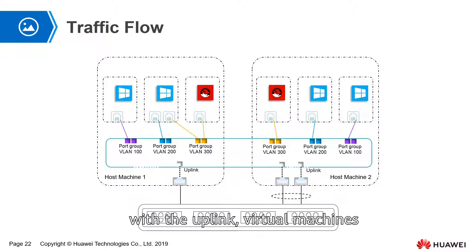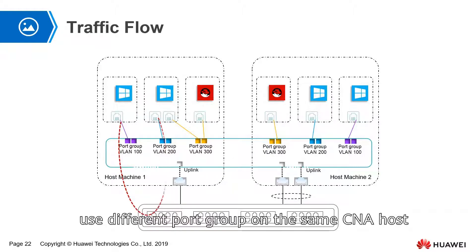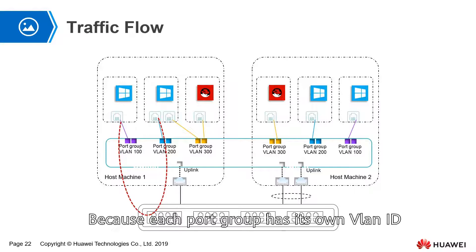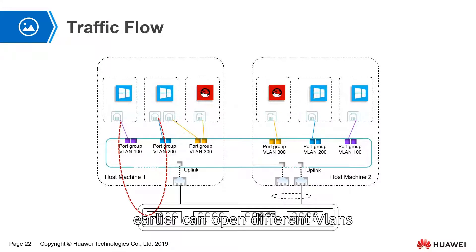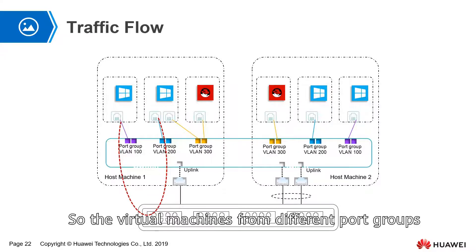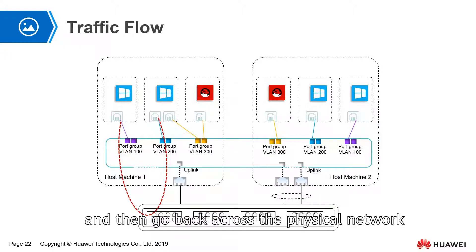With port groups and uplinks, virtual machines can communicate with each other. How is data transferred when virtual machines communicate? There are several situations. The first is using different port groups on the same CNA host. Because each port group has its own VLAN ID, different VLAN IDs cannot communicate with each other directly. So virtual machines from different port groups must connect to a layer 3 switch. The data first go out to the layer 3 switch and then come back across the physical network.